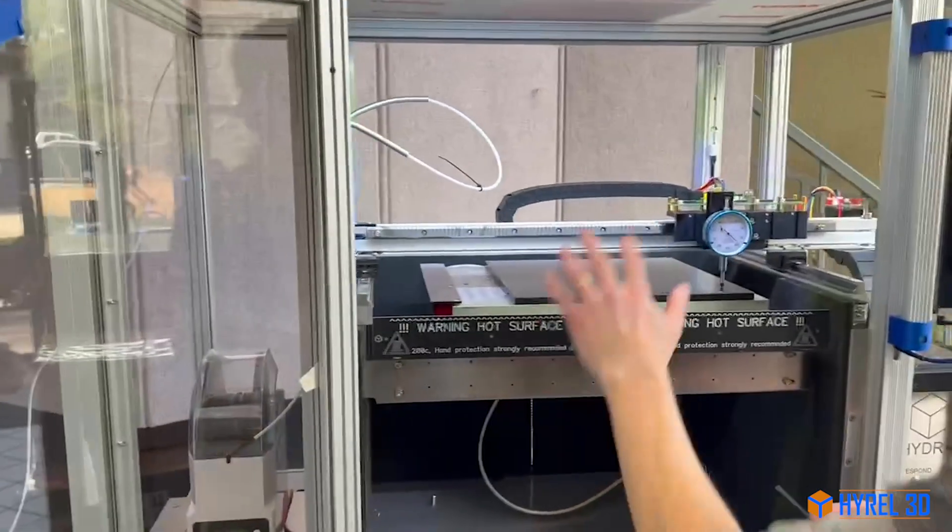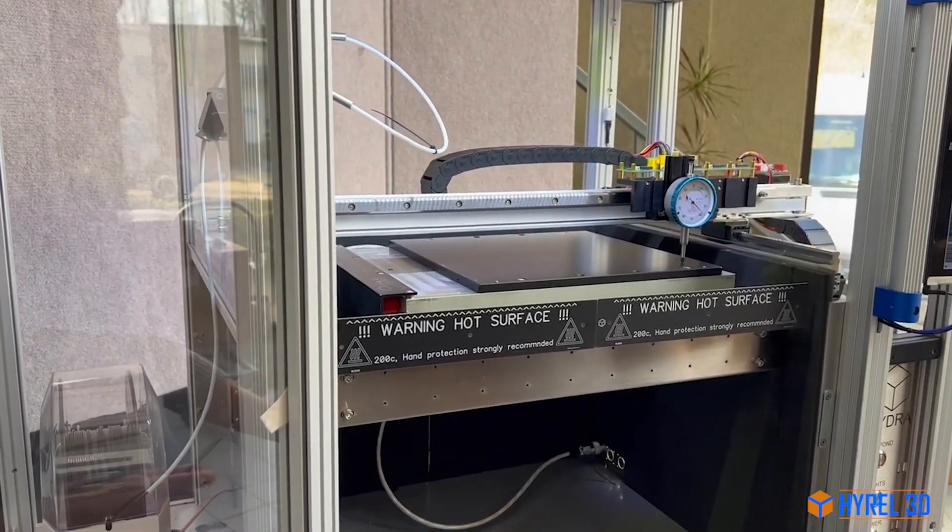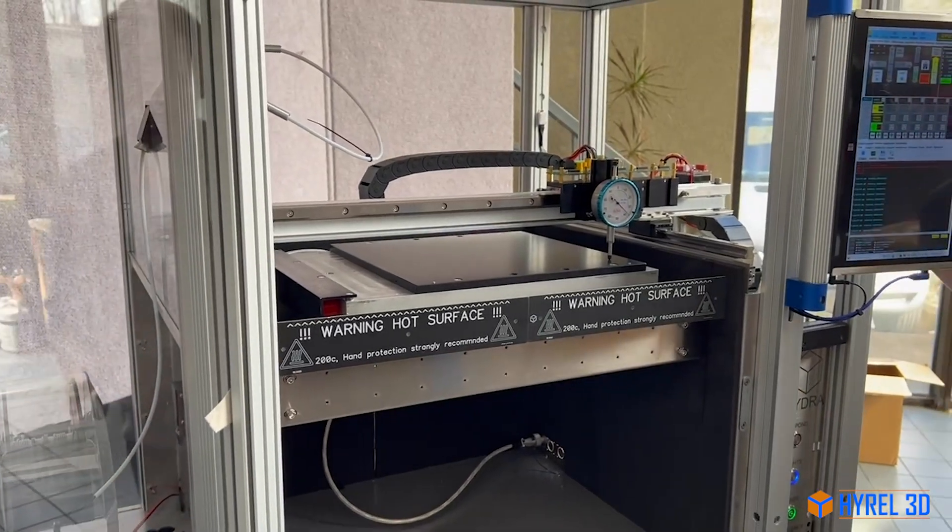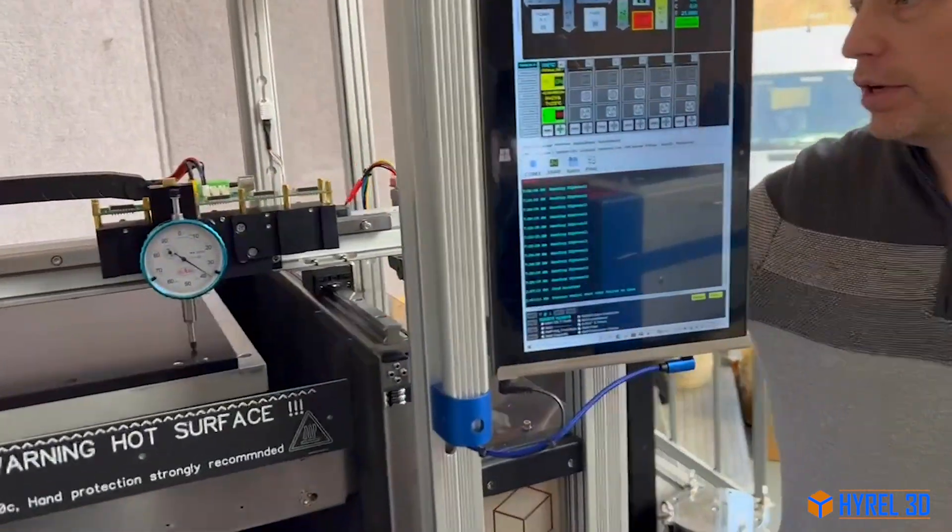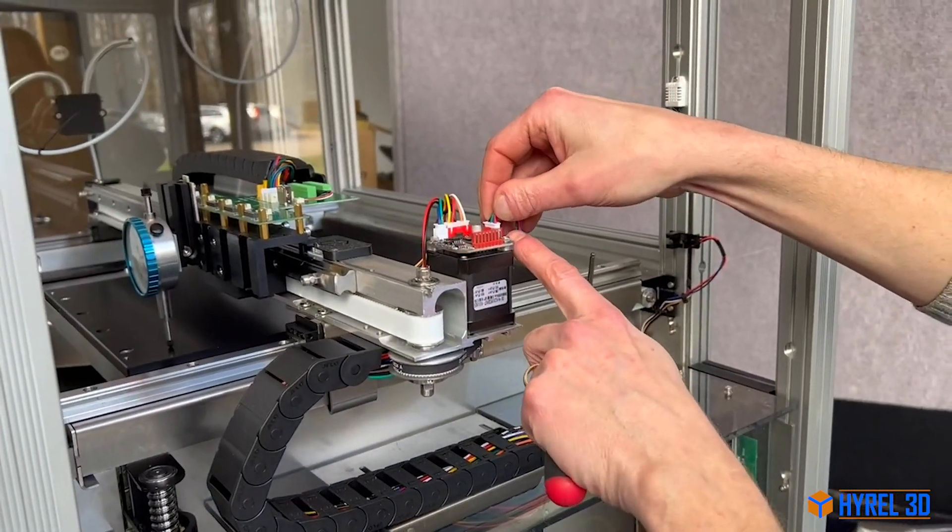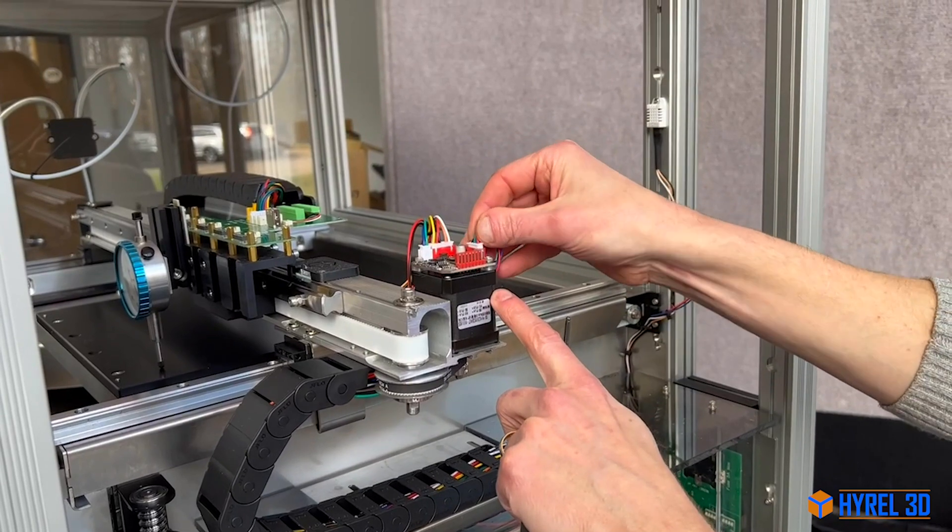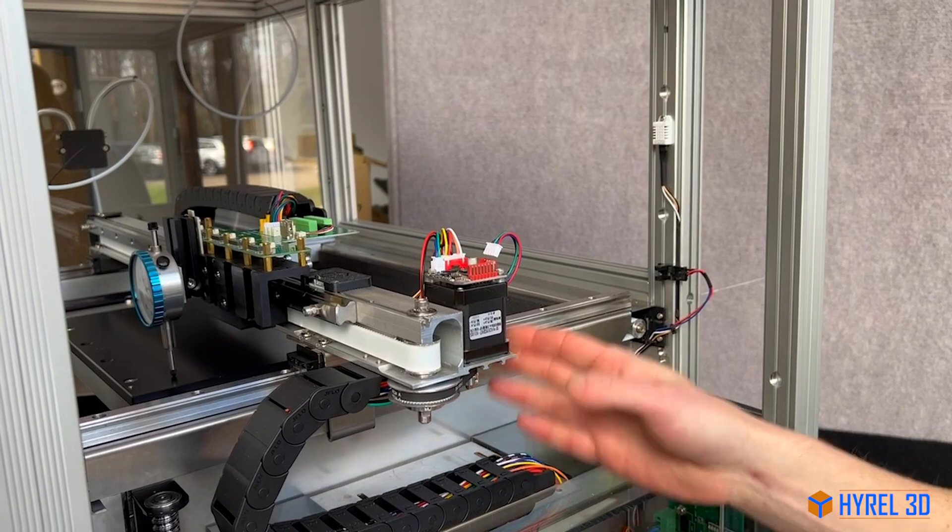Before we start moving things, we're going to turn off the machine. This is to help prevent damage to the motors from the back EMF of moving the machine manually. You're going to remove the motor cable from the motor control circuit board. So now if this motor spins by itself, it's not going to damage the circuit board.